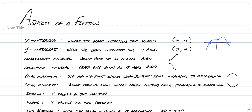When you read a graph, you always read left to right, just like you're reading the words on the screen. So if we're going to have an increasing and decreasing interval of a graph, you read left to right. It increases when it goes up from left to right and it decreases when it goes down from left to right. So remember, always make sure you're reading left to right when you're talking about a graph.